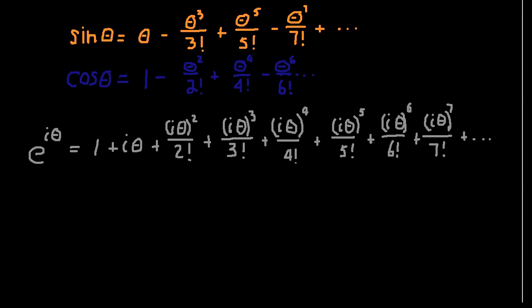We talked about in our programming class the series expansion for sine theta, and we said that you can sum up this series expansion. Sine theta is equal to theta minus theta cubed divided by 3 factorial, plus theta to the fifth divided by 5 factorial, minus theta to the seventh divided by 7 factorial, and so on. It also turns out that the series expansion for cosine theta is: 1 minus theta squared over 2 factorial, plus theta to the fourth over 4 factorial, minus theta to the sixth over 6 factorial, and so on.